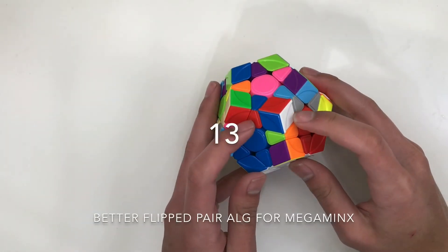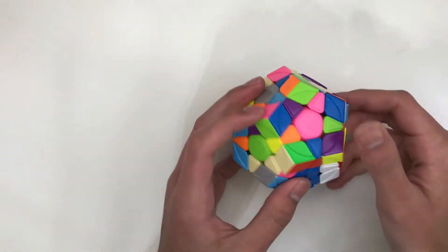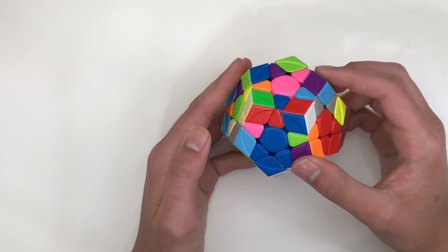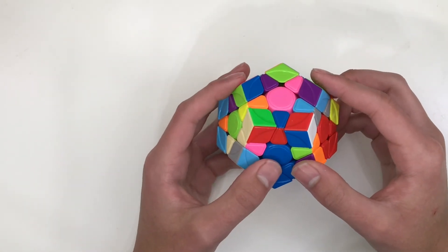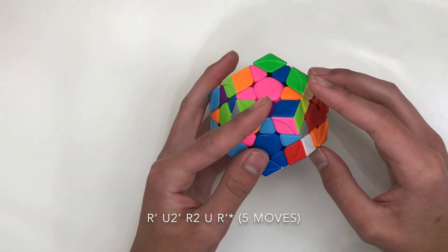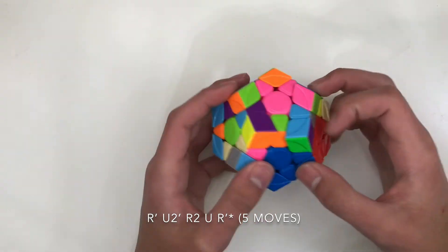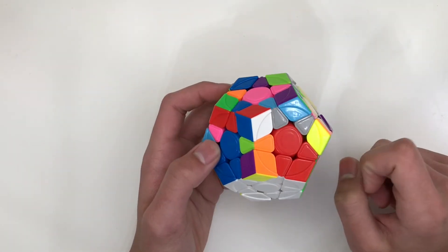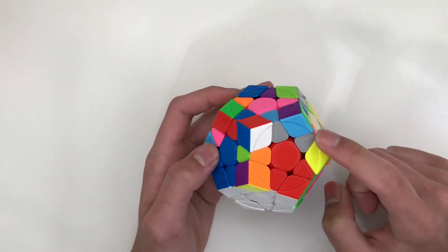You don't want to use the common 3x3 alg for this, which is like that. Because on Megaminx, it's a lot easier and faster to do R', U2', R2, U, R.